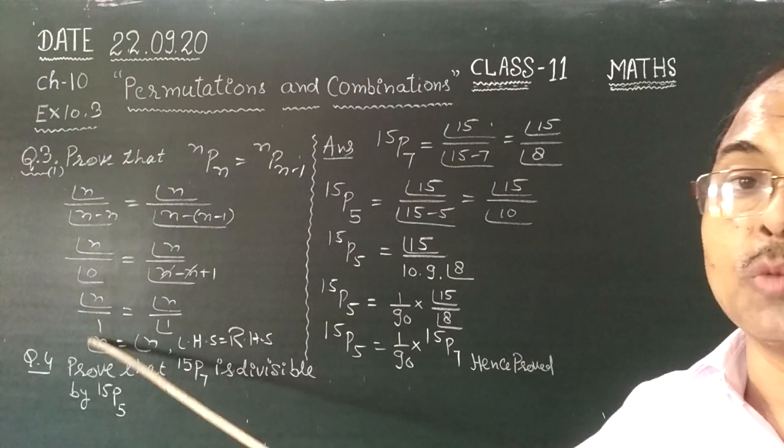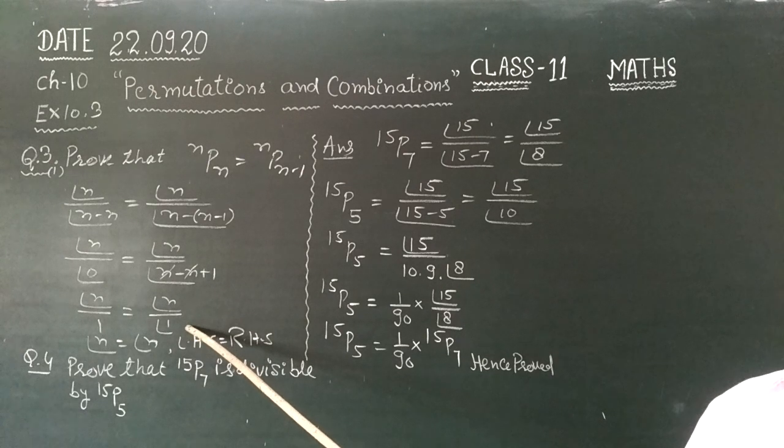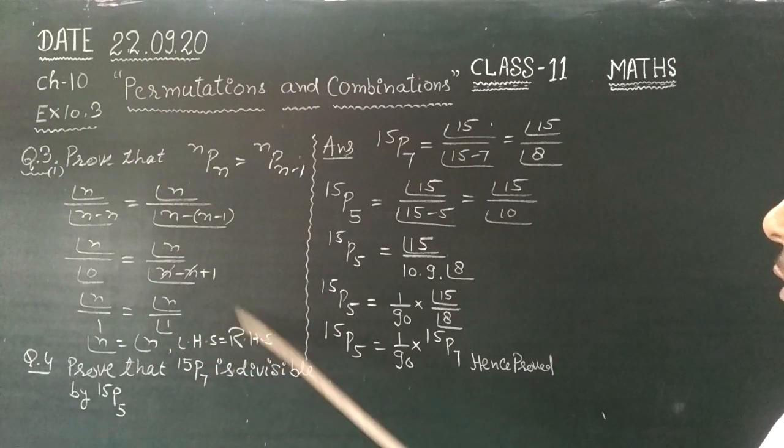Factorial 0 ki value bhi 1 hoti hai, factorial 1 ki value bhi 1 hoti hai. So both are equal, left hand side equals right hand side. That's proved.